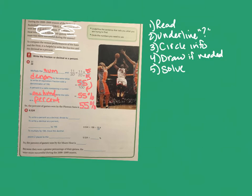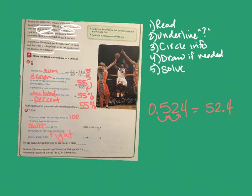Now for the Miami Heat's decimal of 0.524: we want it as a percent. Since converting a percent to decimal means dividing by 100, we do the opposite and multiply by 100 — moving the decimal two spots to the right. So 0.524 becomes 52.4%. The percent of games won by the Miami Heat is 52.4%.